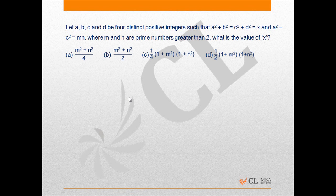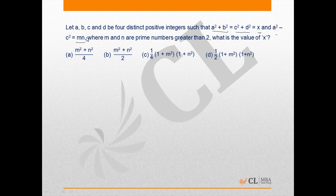As given in the question, a, b, c, d are 4 positive integers and the condition is a square plus b square plus c square plus d square equals to x and a square minus c square is mn. Now,